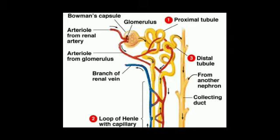The waste products like urea or uric acid get collected into the collecting duct. After this process, the blood is clean and the clean blood is carried out by the renal vein. This renal vein carries clean blood to the lungs, where oxygen is added into the blood, and then the heart pumps the oxygenated blood to all parts of the human body.